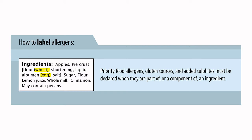Priority food allergens, gluten sources, and added sulfites must also be declared when they are components of ingredients. I frequently get questions from industry asking whether there is a required rank order for declaring these — there isn't. But if allergens are present in components, they must be declared. We've discussed in previous slideshows that some components are exempt from ingredient labeling, but that exemption does not carry over to allergen labeling. If your ingredient has components with allergens but is exempt from component labeling, you still have to declare the allergy. You cannot hide allergens within components.